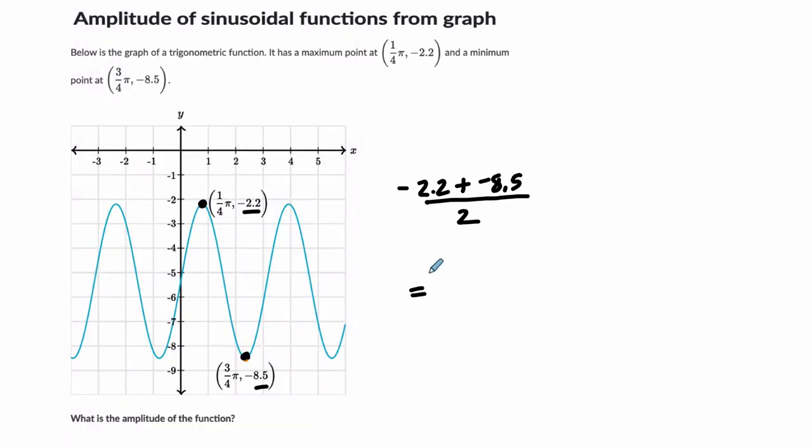About negative 5.35. Okay, so negative 5.35. Alright, not bad, I got it. It's about here. And now we want to find the distance from this max to this middle.